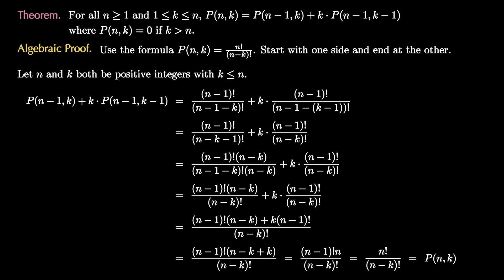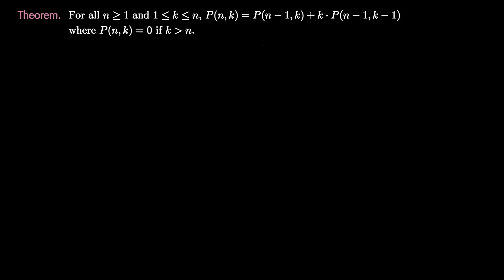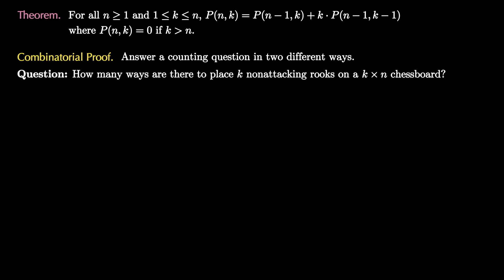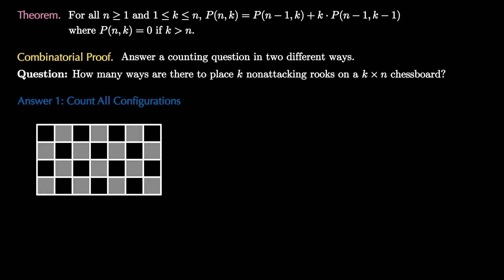This is a systematic way to verify the identity, but it doesn't always help us understand what's going on. So let's do this with a combinatorial proof, where we answer a counting question in two different ways. We'll consider the question: how many ways are there to place k non-attacking rooks on a k-by-n chessboard? For our first answer, we count all configurations by going row by row and choosing positions for the rooks, resulting in P(n,k) total configurations.